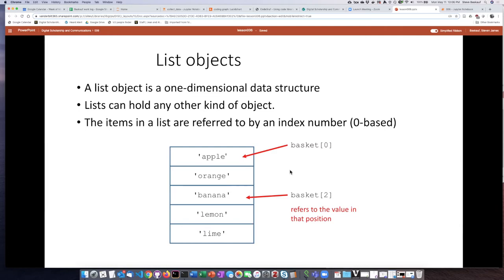So if we name this list 'basket,' then the first slot in the basket, the first item we would call basket zero, the third item we would call basket two. The number inside the square brackets refers to the value in that position in the list.